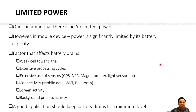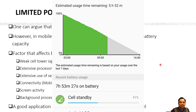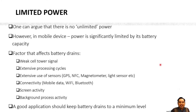Next we look at limited power. For mobile devices, the limitation of power relies on its battery. Several factors affect battery drain: background processing, extensive processing cycles, weak cell towers, and the use of GSM data. GSM data, when compared to Wi-Fi network, consumes more battery power.